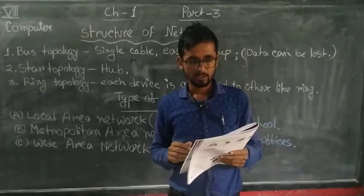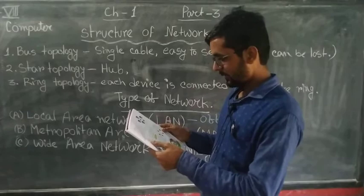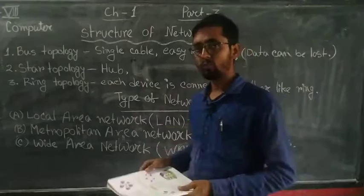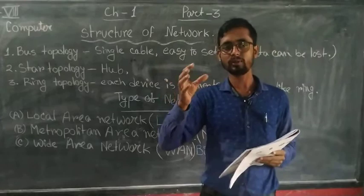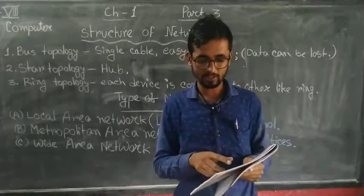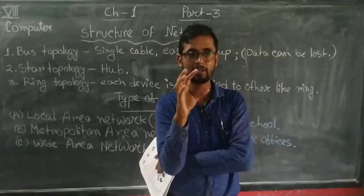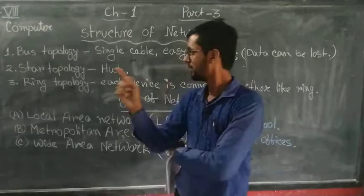However, there is one problem in star topology. If the hub fails — that means if the main central device stops working — the whole network will go down and the network cannot run properly. This is a disadvantage of the star topology network.